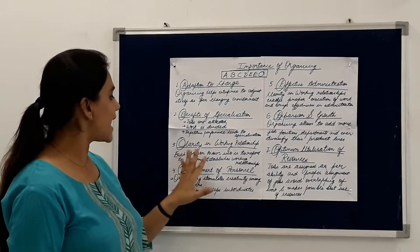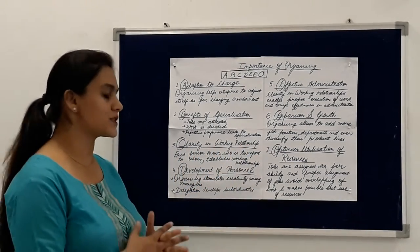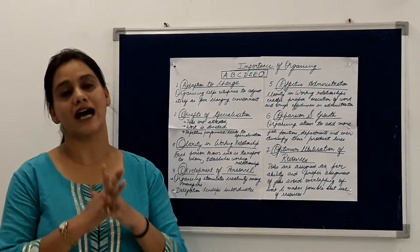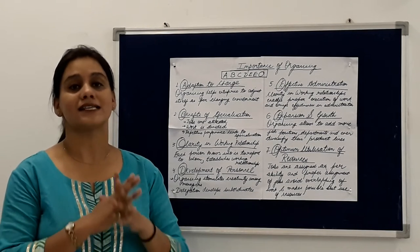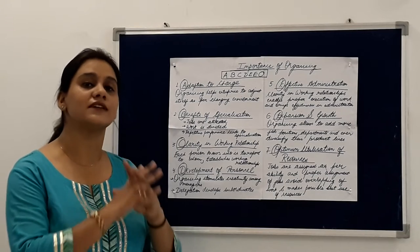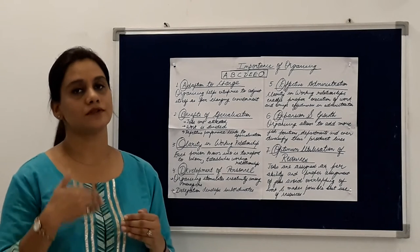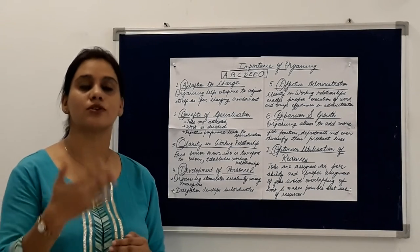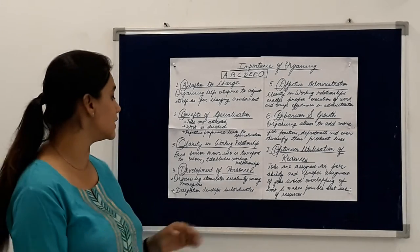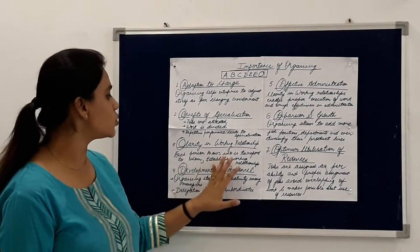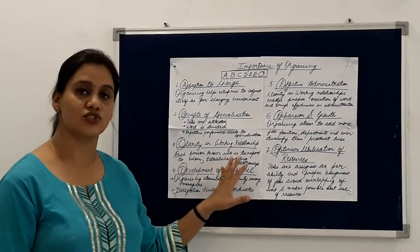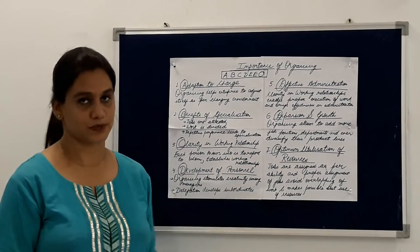The third is clarity in working relationships. Clarity in working relationships — the last step of organizing establishes the reporting relationship, so it is very clear among the superiors and the subordinates who is to report to whom, who is accountable, who is responsible. So basically each person knows who is to report to whom and this establishes working relationships.